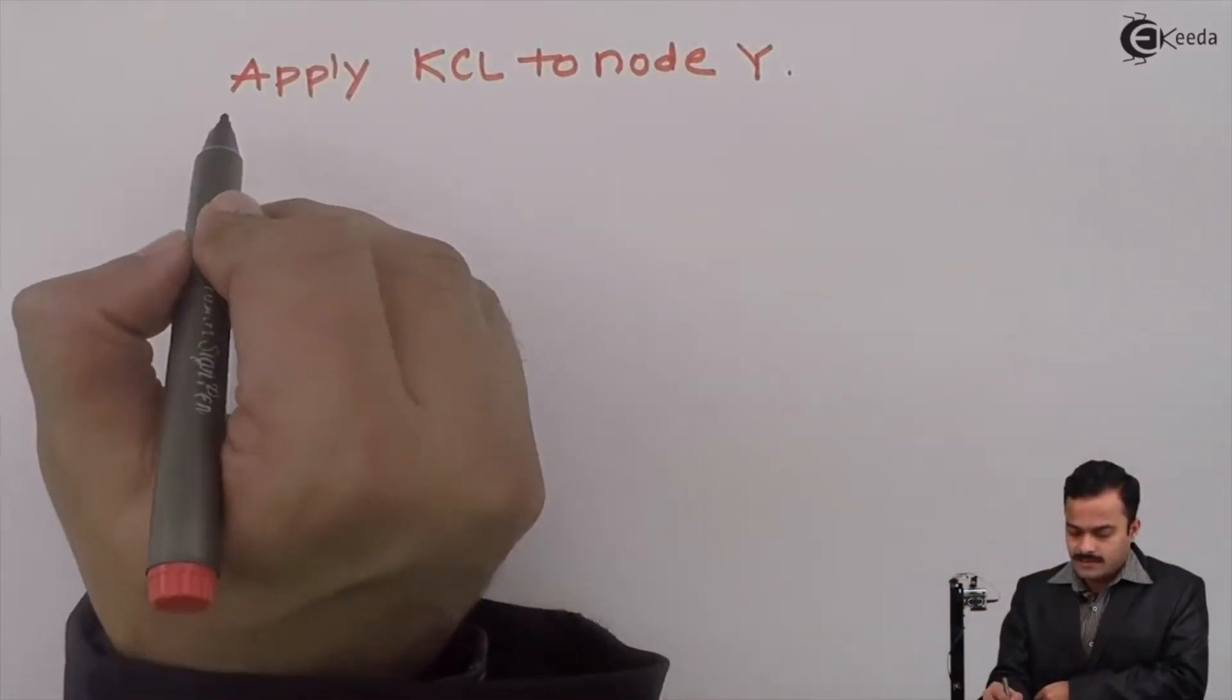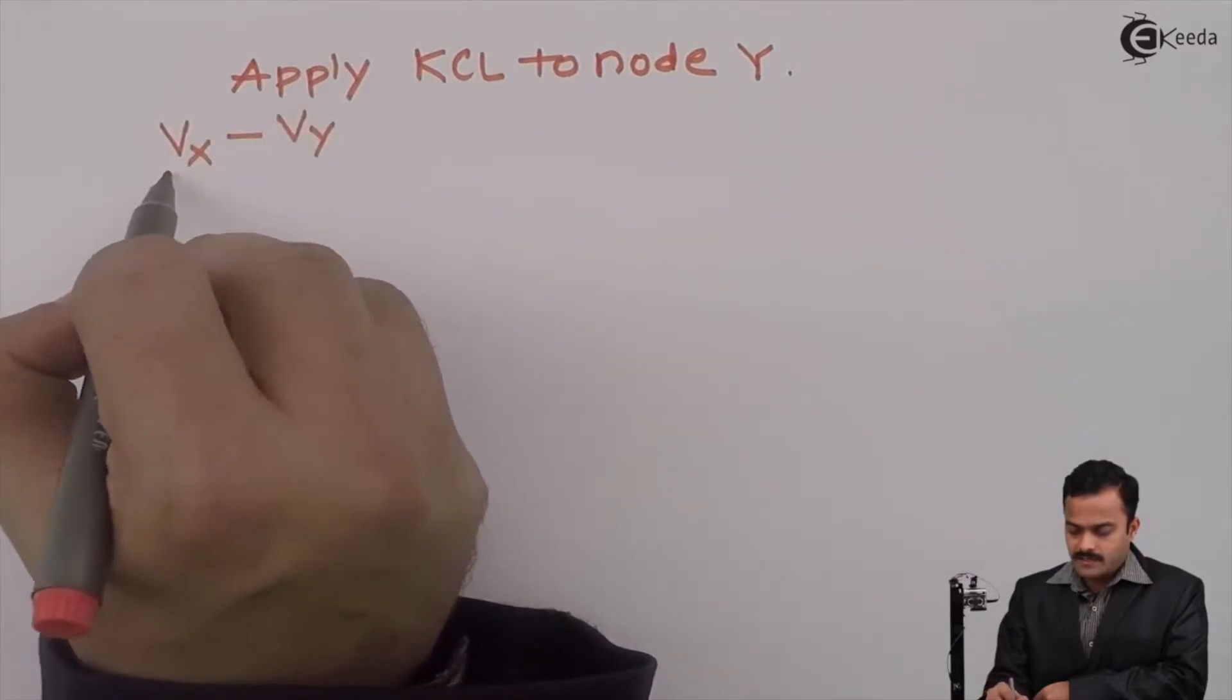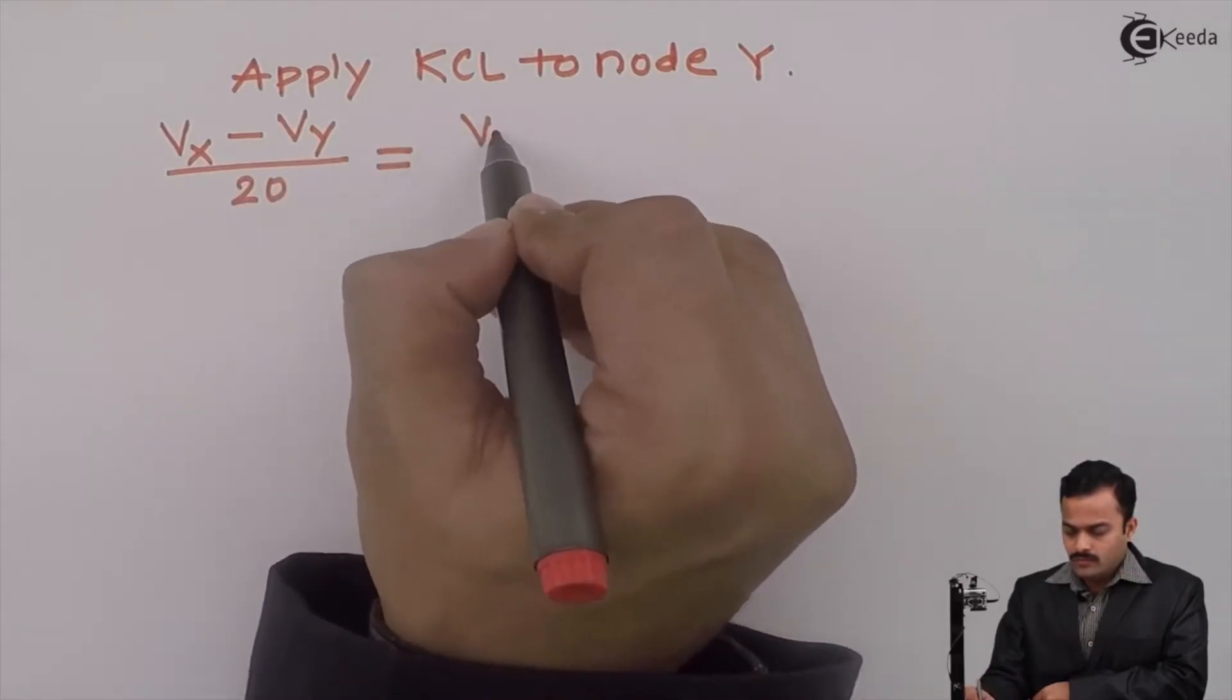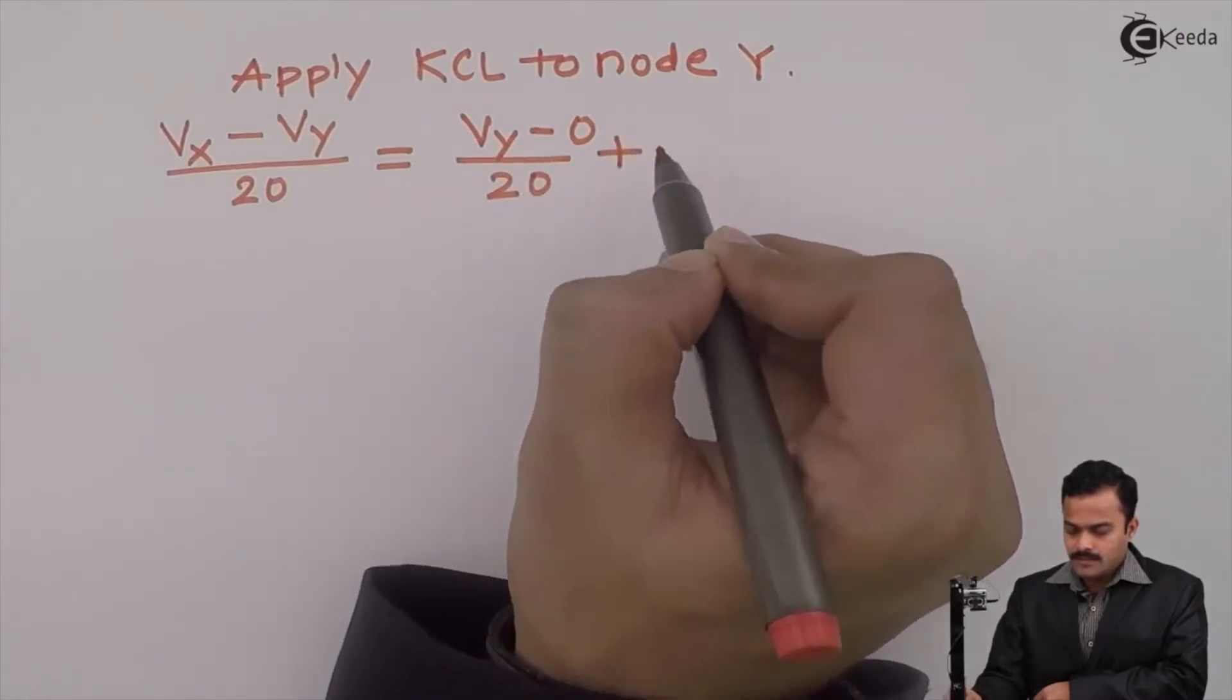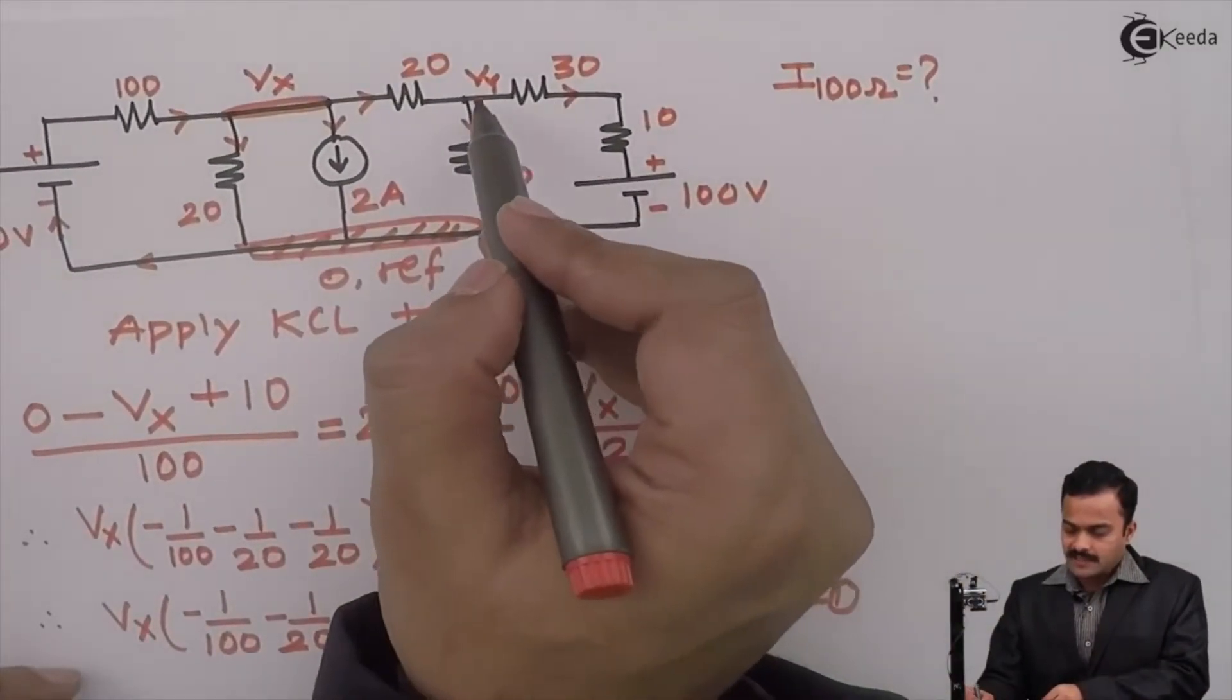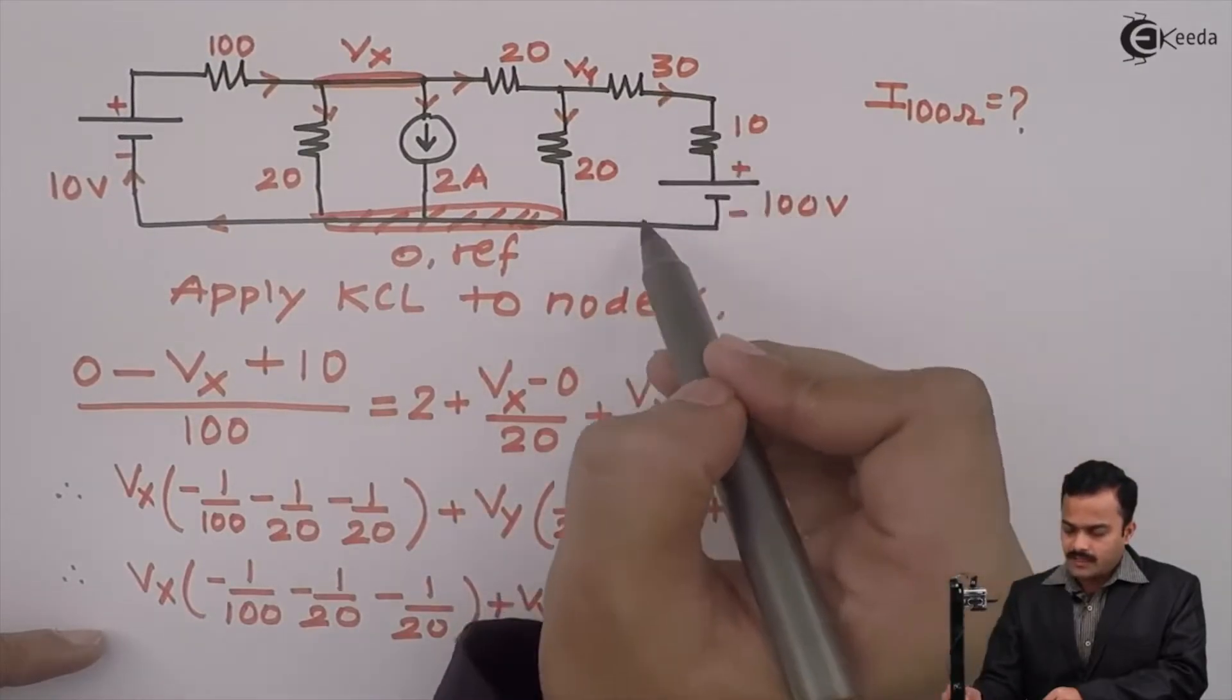So the equation I will get is Vx minus Vy divided by 20 equal to Vy minus 0 divided by 20 plus. Because now for this branch, it has started from Y and ending on reference, and in the direction of current,